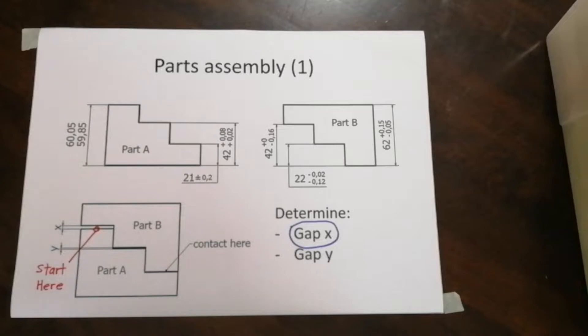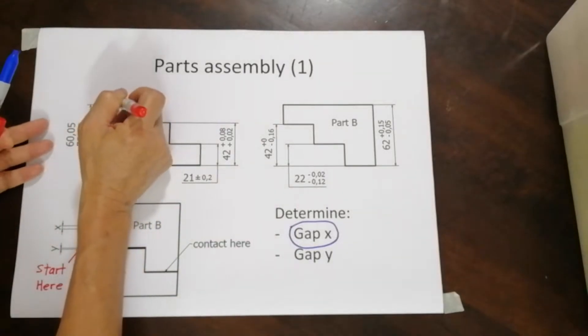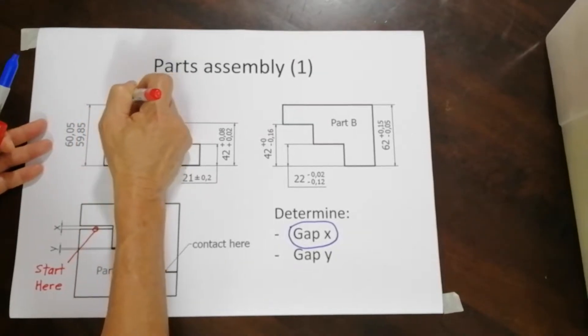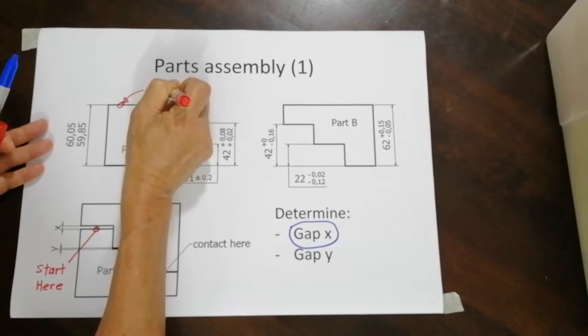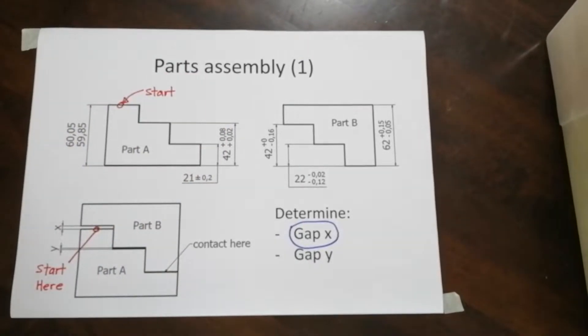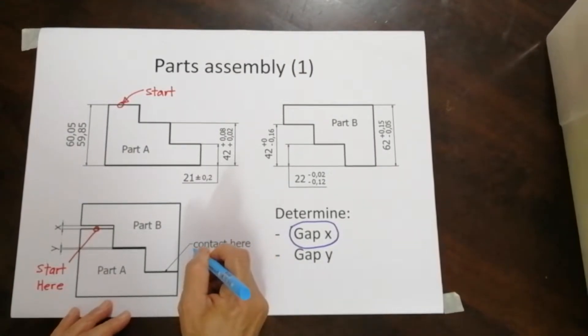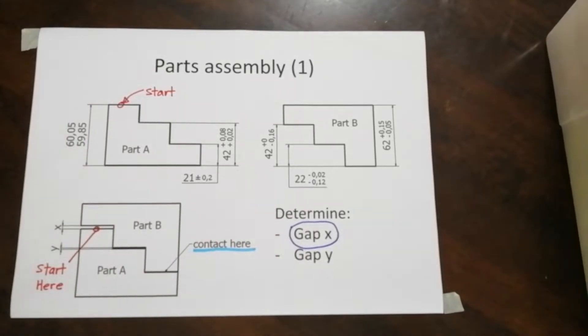So if I start from there, I will translate this point onto part A. This is where I'm going to start. When I start from here, I will go along the dimension. Objective is to get to contact point. See, from A to B, this is the place that you can get to. So I need to get to B.